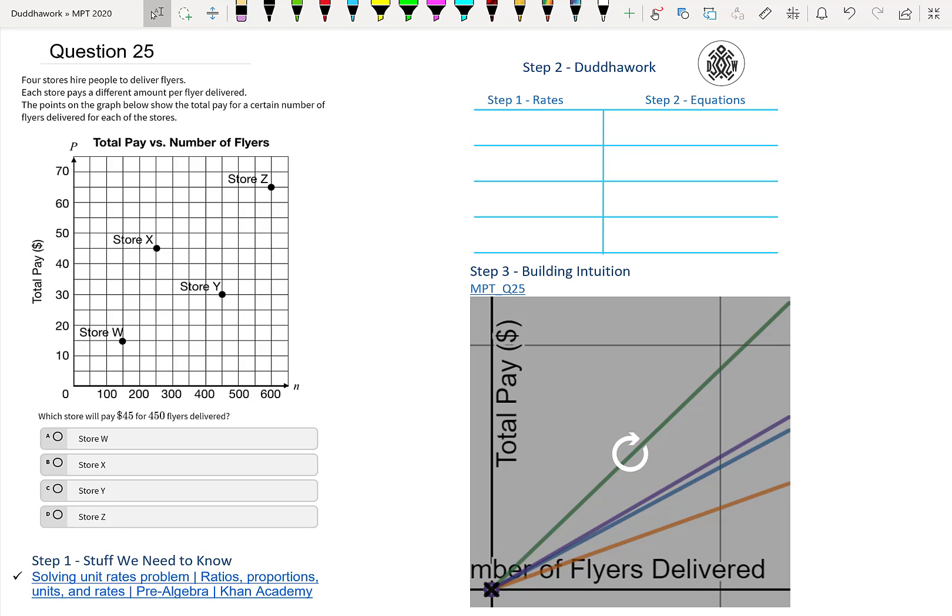Hello everyone, welcome to another episode of Do the Work. Here we're going to cover question 25 of the math proficiency test, where we're asked to find the store that will pay $45 if you deliver 450 flyers, given this particular chart.